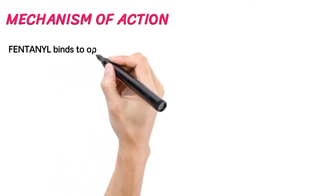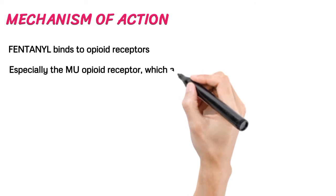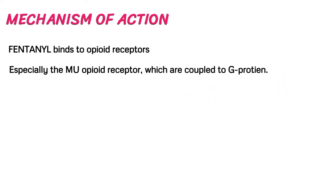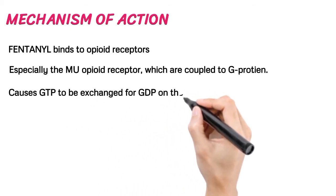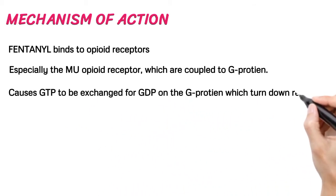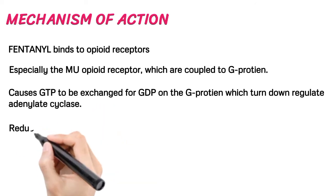Mechanism of Action: Fentanyl binds to opioid receptors, especially the MU opioid receptor, which are coupled to G-protein. Activation of opioid receptors causes GTP to be exchanged for GDP on the G proteins, which downregulates adenylate cyclase, reducing concentrations of cAMP.